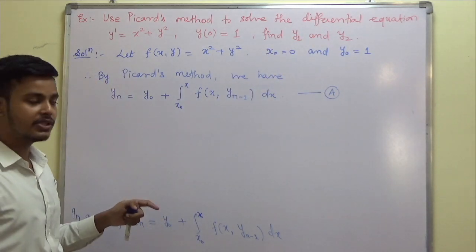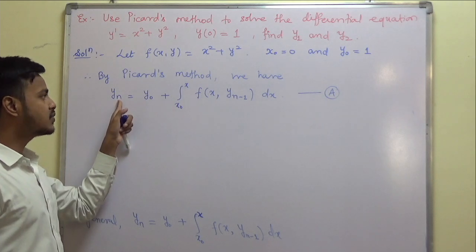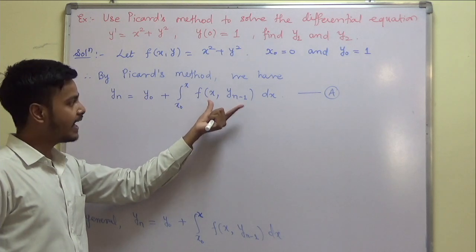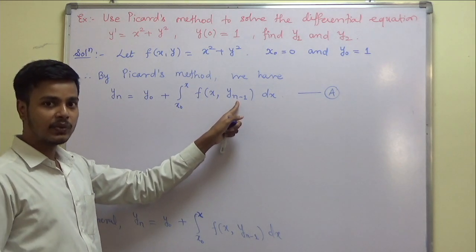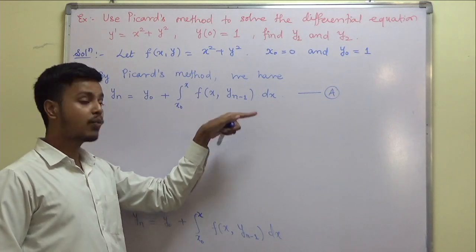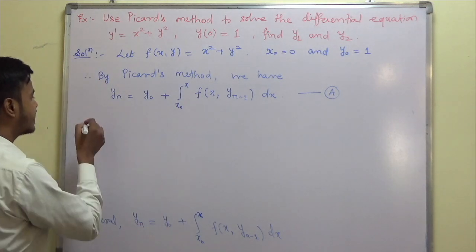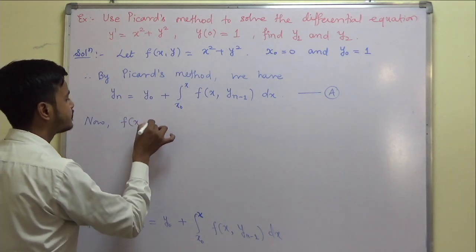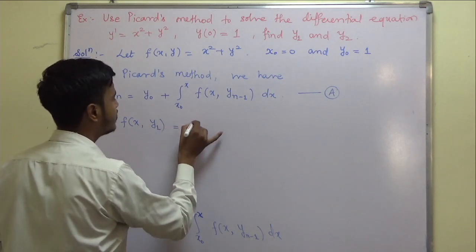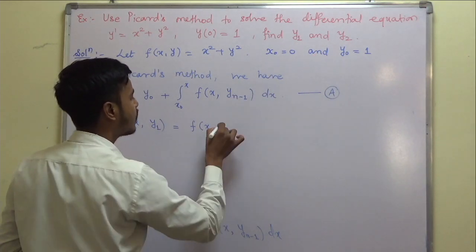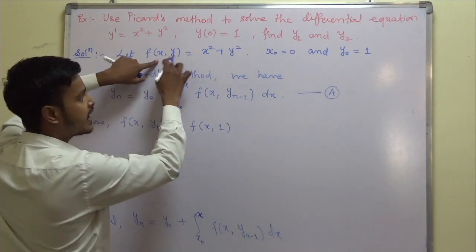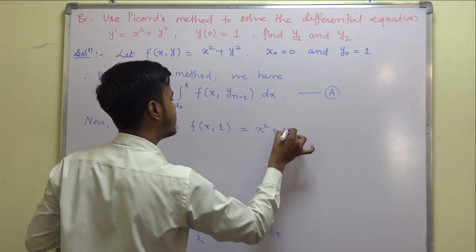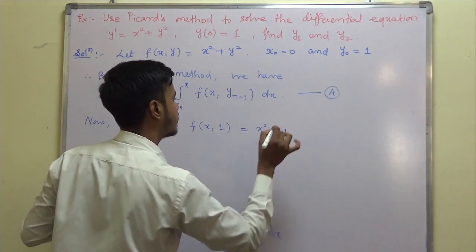For y₁, we need f(x, y₀). What is f(x, y₀)? Since y₀ = 1 and f(x, y) = x² + y², we get f(x, 1) = x² + 1² = x² + 1.